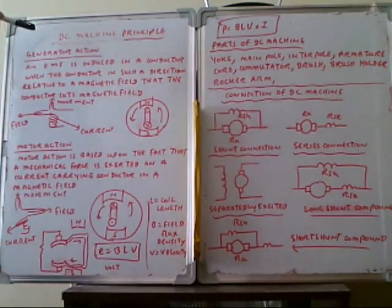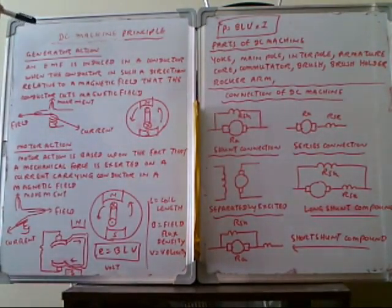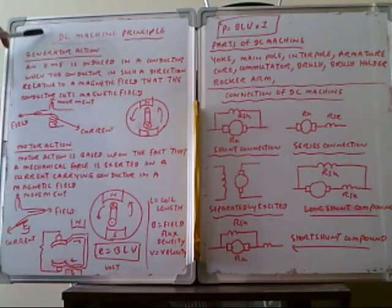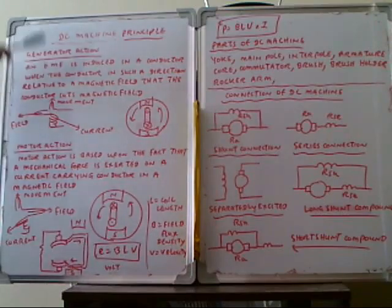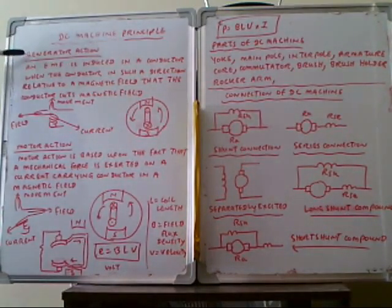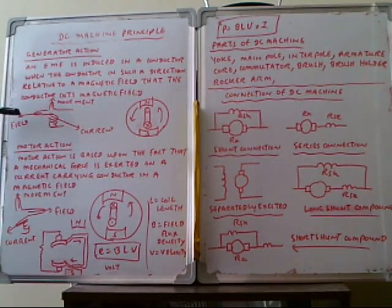This is the principle of the DC machine. DC machines are composed of a generator and a motor. Both the generator and motor are of similar construction. For the generator, we utilize Fleming's right-hand rule.